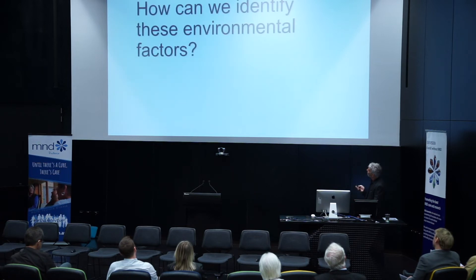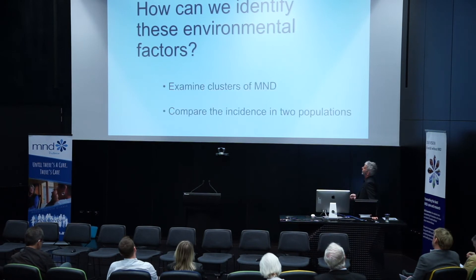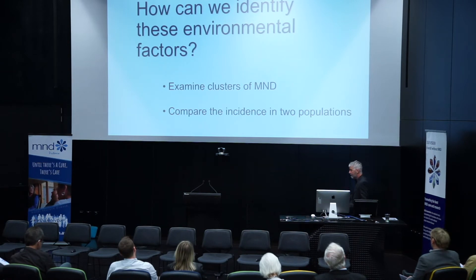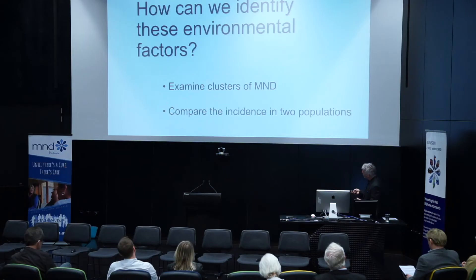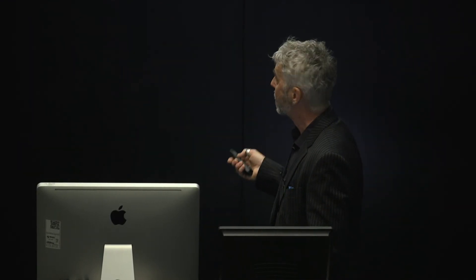So how can we identify these environmental risk factors? They're obviously really important. There are two ways: one is to examine clusters of MND — if somewhere has a really high incidence and it's not genetic, it tells us something about environmental risk factors. The other is to compare the incidence in two populations, such as male versus female — the incidence in males is higher than in females. You can do this for anything you suspect, whether it be exposures to plastics, metals, or whatever, and compare the incidence in two populations.